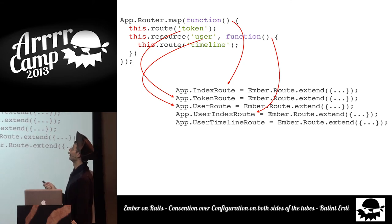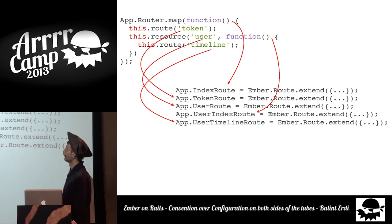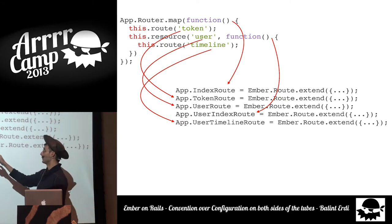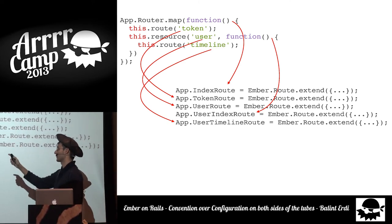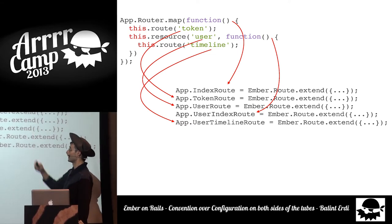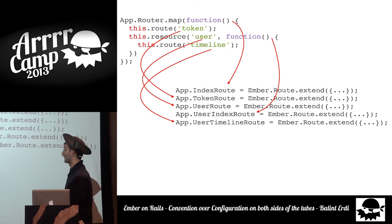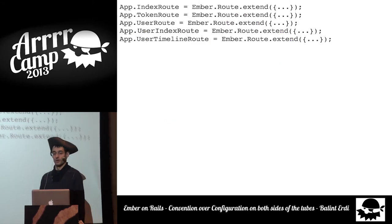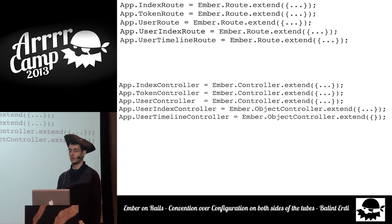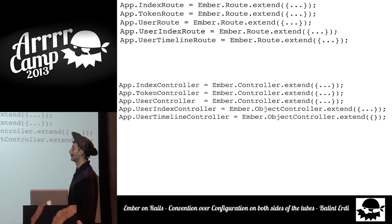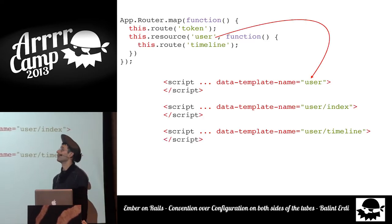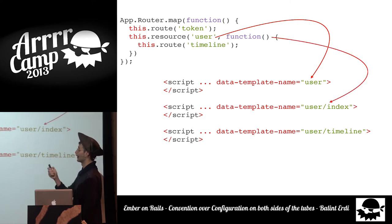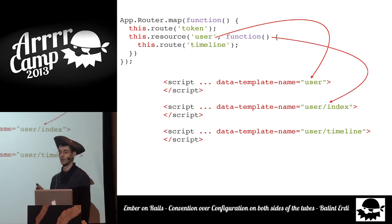You also have resource routes in Ember. You use these when you want to nest other routes inside, reflected in the URL. The routes inside that resource block will use the name of the resource as a prefix. So the user timeline route — I define a timeline route, and the name you use to modify its behavior is going to be user (the resource name) dot timeline. For the controllers, you use the same name but with a controller suffix instead of route. For templates, instead of camel case, you use the route name with a slash between segments.